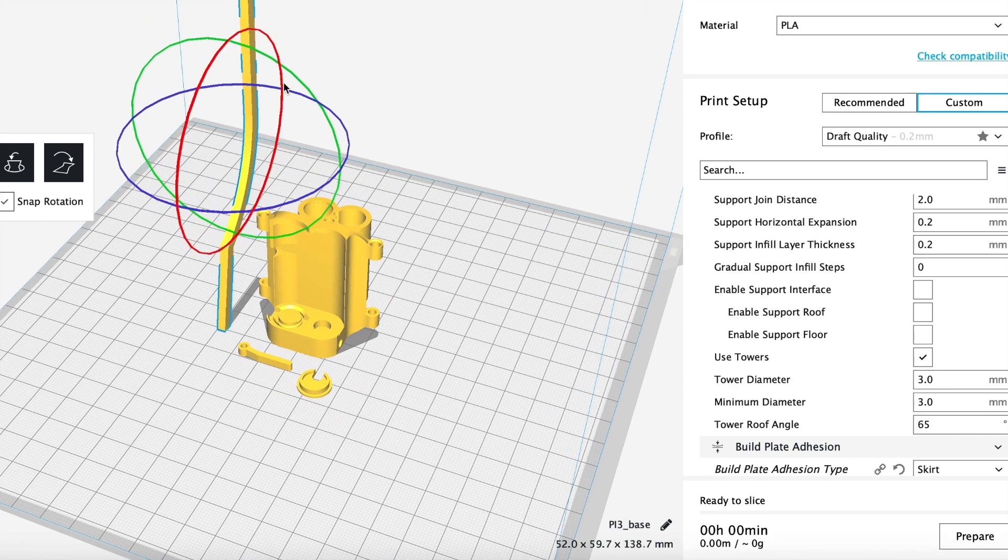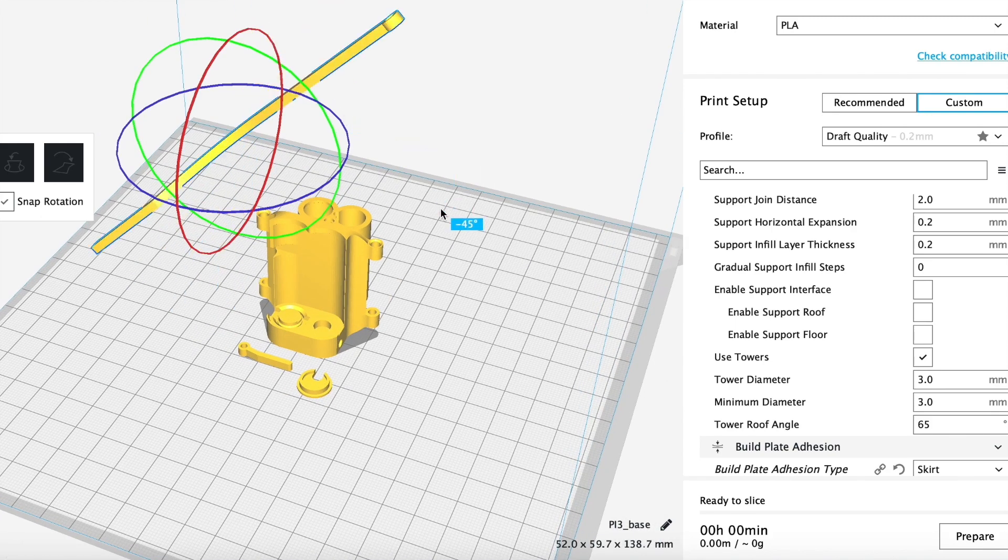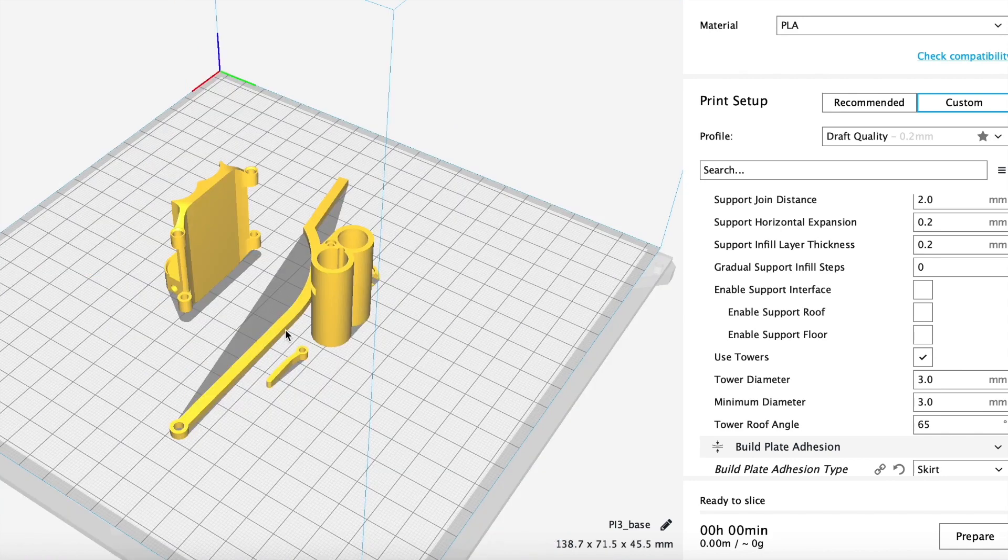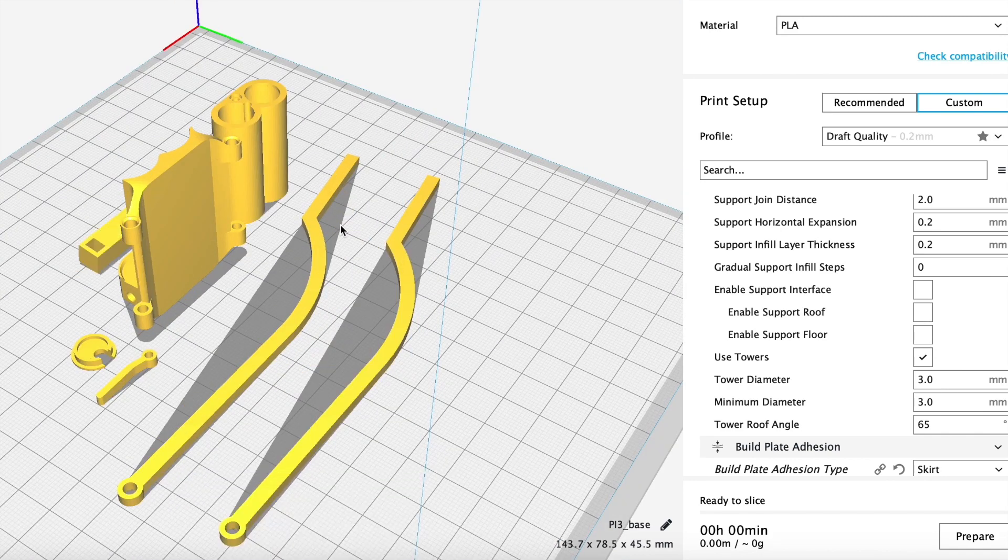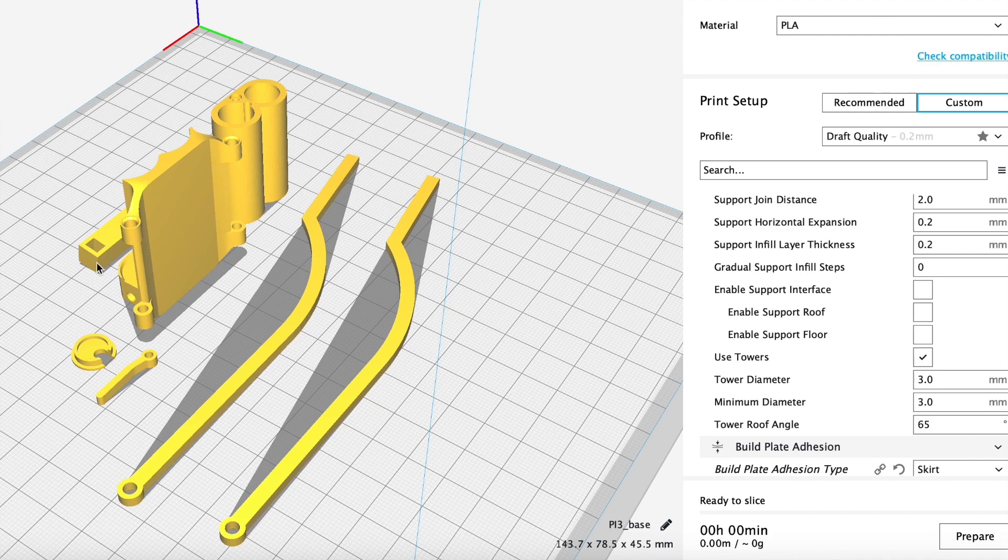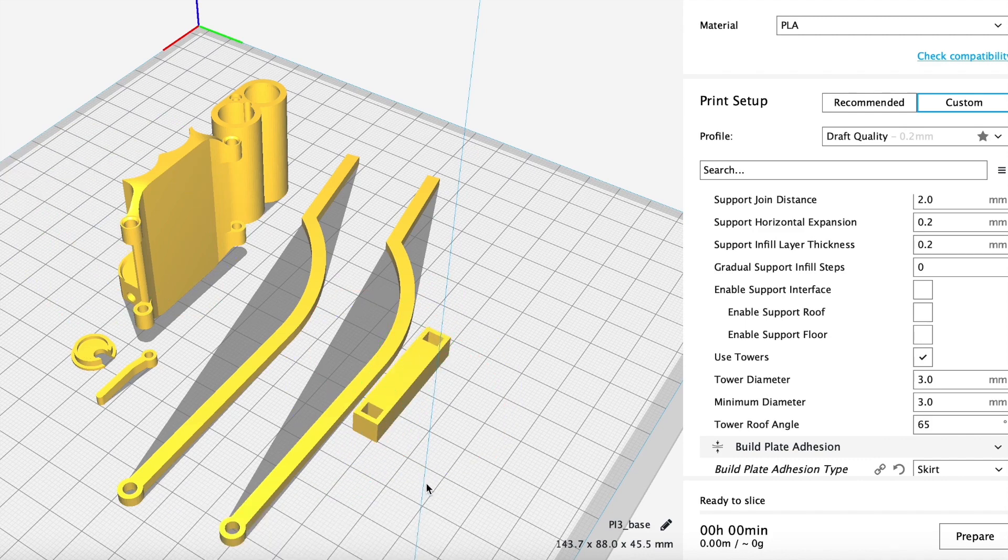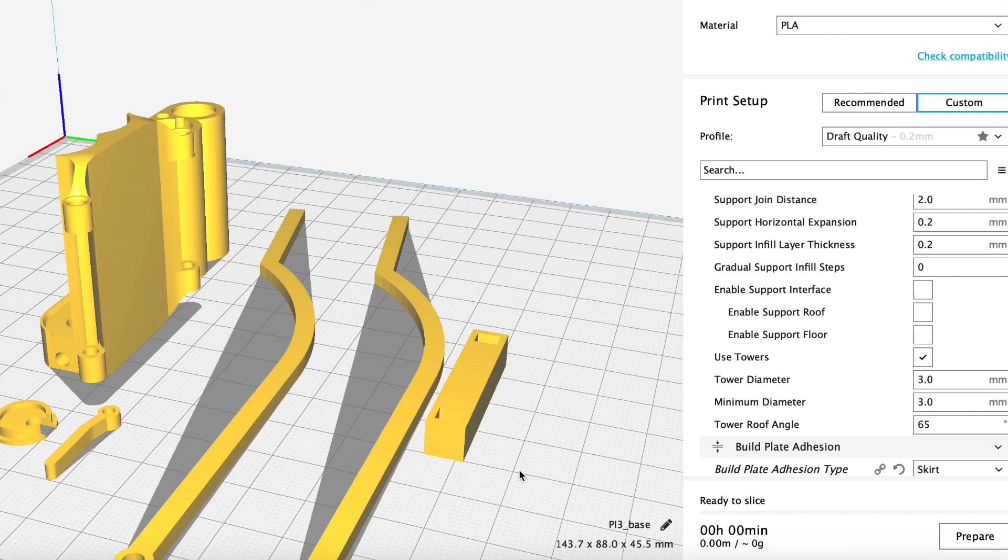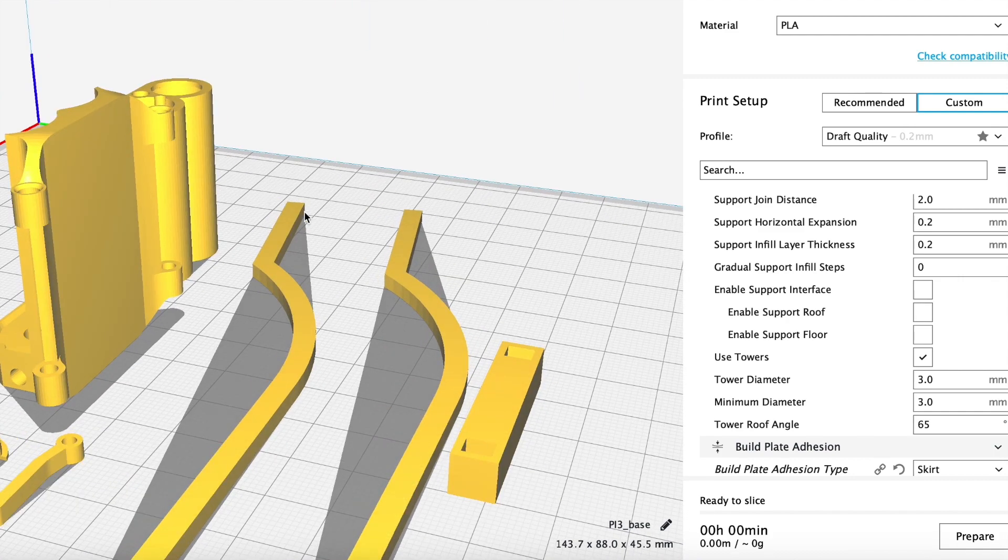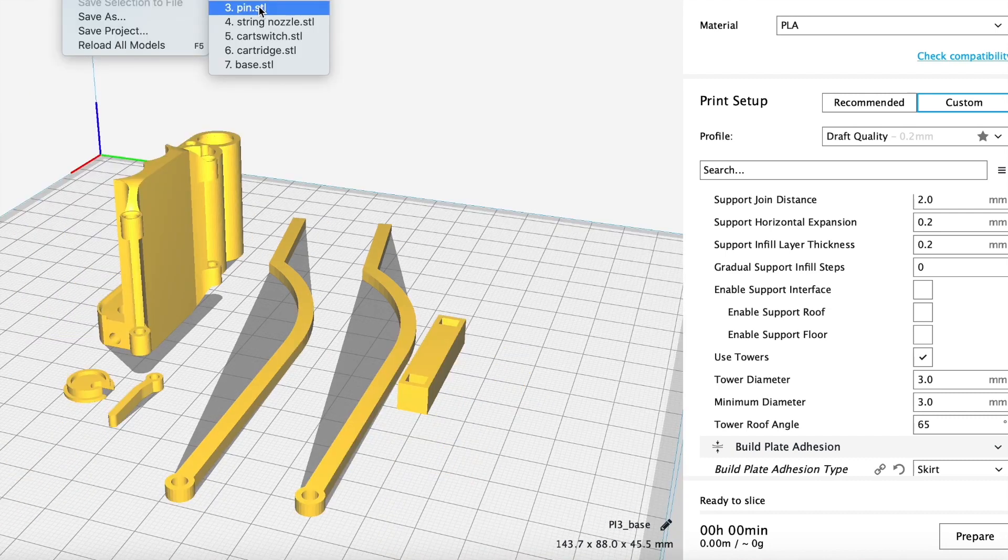Next we have these lever pieces which are very long pieces but pretty simple. You're going to want to print them like this. This as you might be able to tell is the trigger lever. Next we have this part I call the trigger and you're going to want to lay this flat so it prints like that. This is the trigger.stl file. These two slots are for those two ends of the lever to insert.